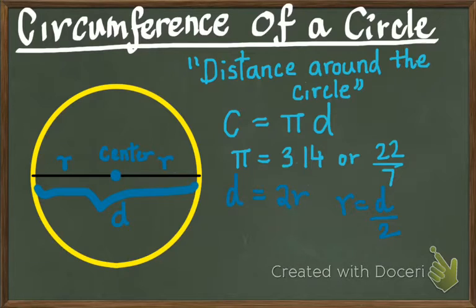In terms of the radius, the formula for the circumference of a circle, c equals pi d, can now be written as c equals 2 pi r, where pi will still take the value either 3.14 or 22 over 7.